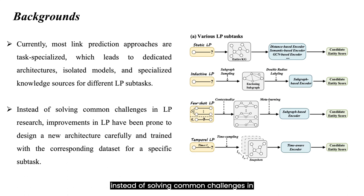Therefore, instead of solving common challenges in link prediction research, improvements in link prediction have been prone to design a new architecture carefully trained with the corresponding dataset for a specific subtask.